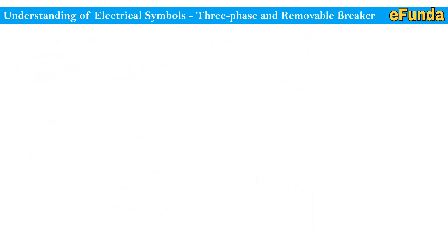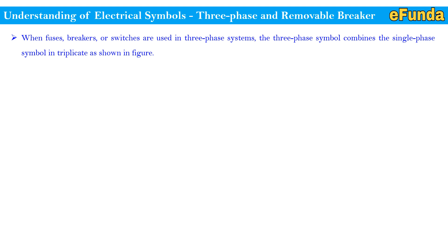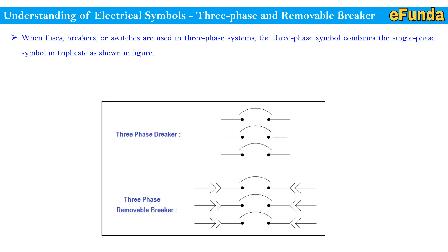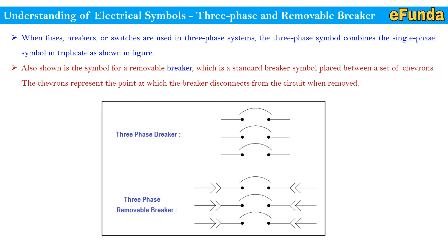Understanding of electrical symbol — three phase and removable breaker. When fuses, breakers, or switches are used in a three phase system, the three phase symbol combines the single phase symbol in a triplicate manner. One can refer to how the three phase breaker is shown with three symbols. Also shown is the symbol for a removable breaker, which is a standard breaker symbol placed between a set of chevrons. The chevrons represent the point at which the breaker disconnects from the circuit when removed.